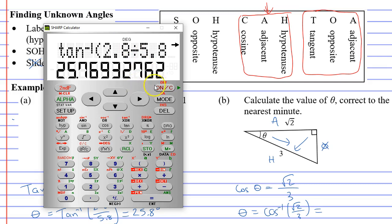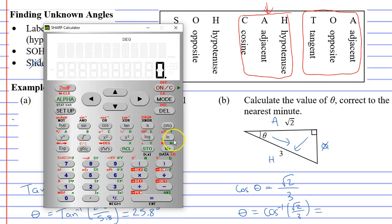All right, let's work out question B. We're going to clear it. We have cos inverse, or shift, or sorry, second function cos. Open our brackets. Root 2. Divide 3. Close the brackets. Equals.